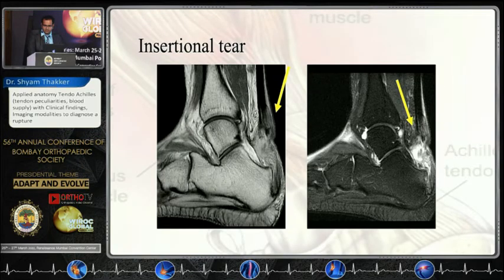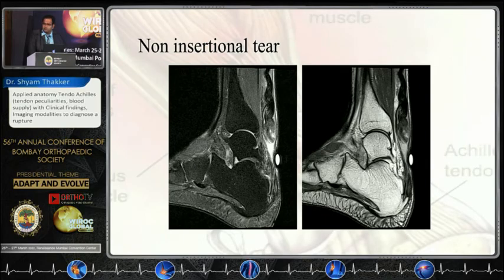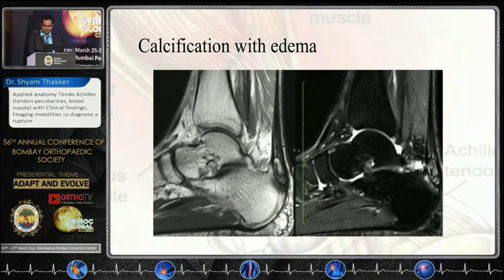A full-thickness insertional tear shows no distal stump. Haglund's deformity can present with a huge bump, ossification, and a complete tear. Non-insertional tears show the paratenon still intact, with the proximal stump becoming wavy while a distal stump is still found. Some cases also show calcified tendon or osteophytes.